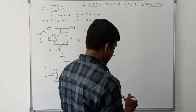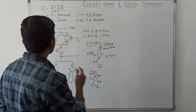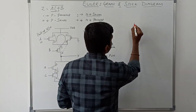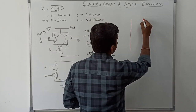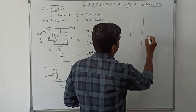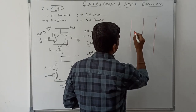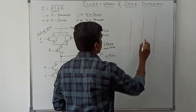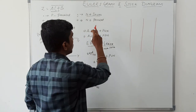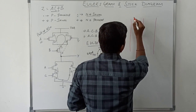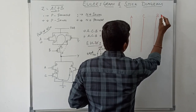Now I am going to draw the stick diagram for this boolean expression. This red color denotes polysilicon. I also mention the transistor order — the same order A, C, B — and this solution order is reflected in the stick diagram: A, C, B.